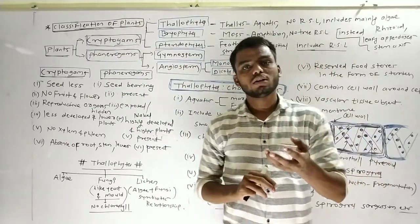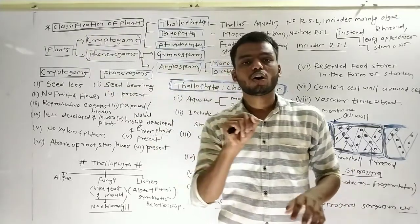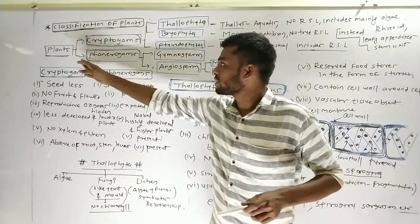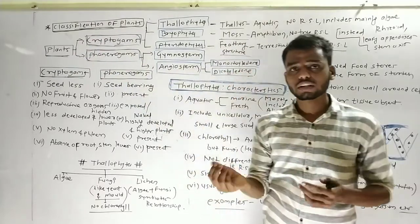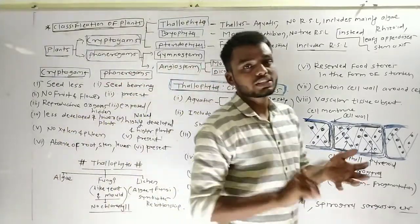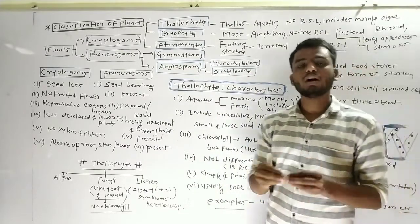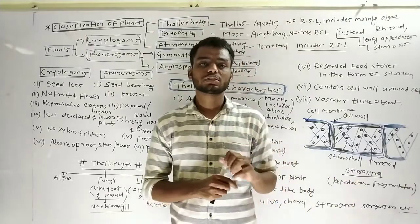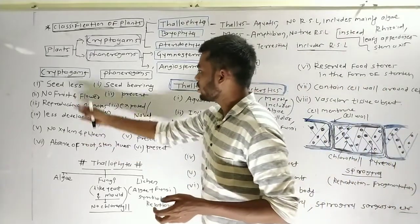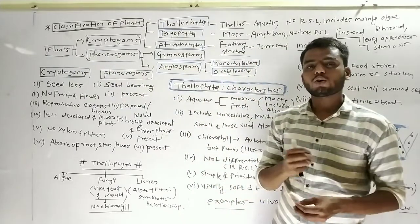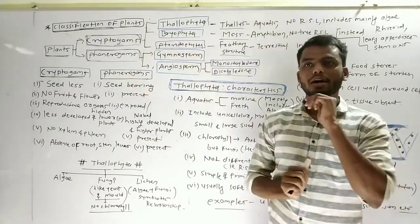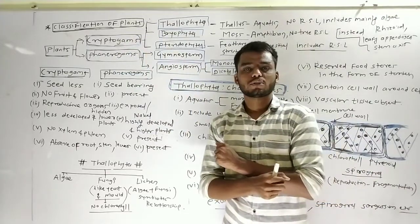Cryptogamae and Phanerogamae are the two main divisions or sub-kingdoms of the kingdom Plantae. We also discussed which criteria were used to classify plants into these two sub-kingdoms. The first criteria was the presence or absence of a vascular system — that is, xylem and phloem for conduction of water and food. Another criteria was the presence or absence of certain organs, and the presence or absence of seeds.